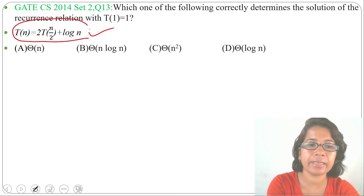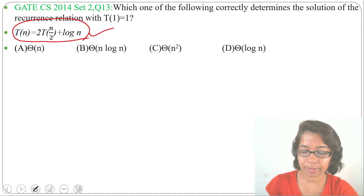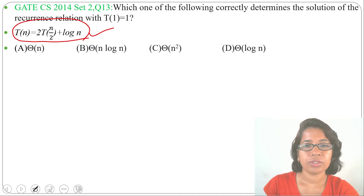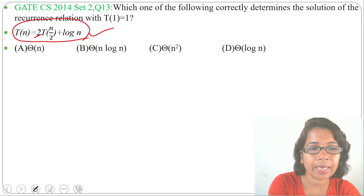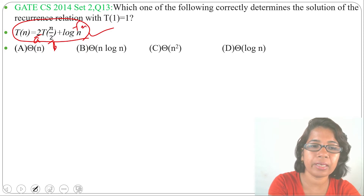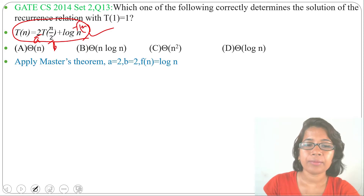Since this recurrence relation is a divide and conquer recurrence relation, we can apply the master theorem. To apply it, first identify a, b, and f(n). Here a = 2, b = 2, and f(n) = log n.